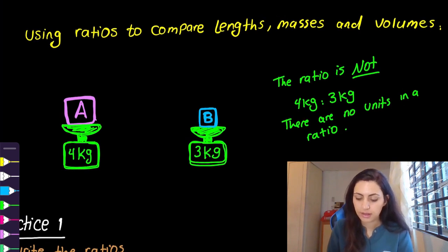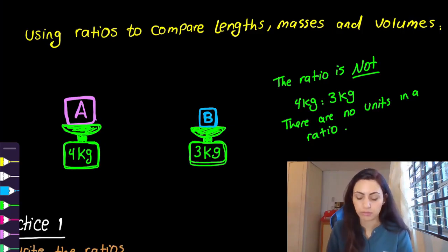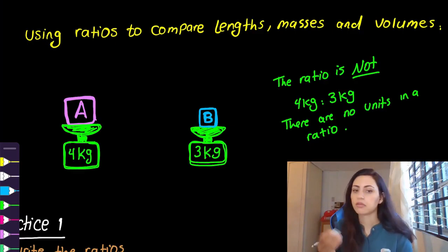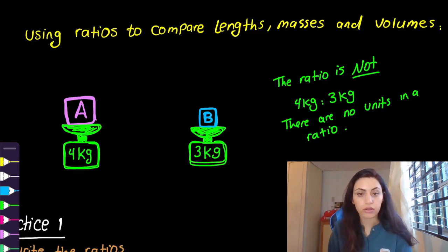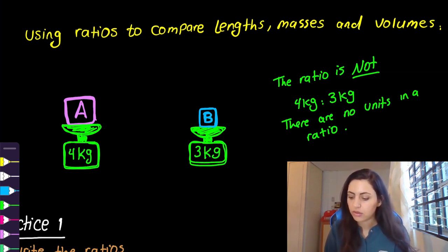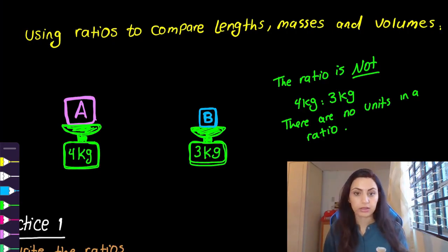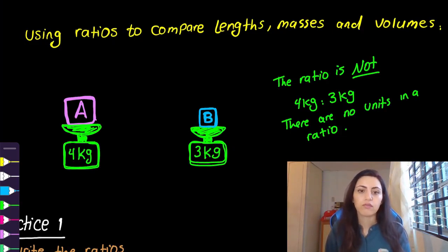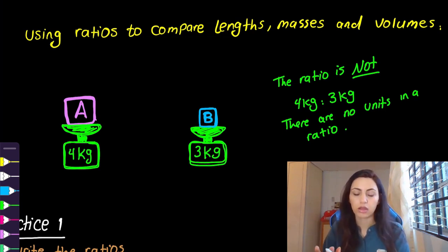The next part is using ratio to compare length, masses, and volumes. For example, object A is four kilograms and object B is three kilograms. The ratio is not 'four kilograms to three kilograms' — there is no unit in a ratio. We don't say kilograms, centimeters, nothing. Just numbers.